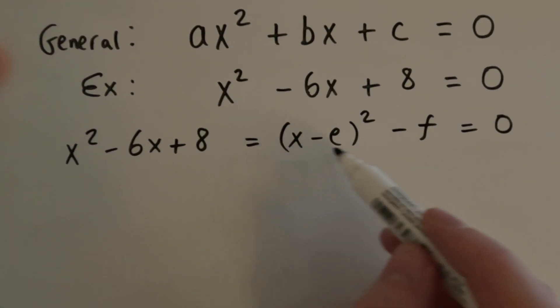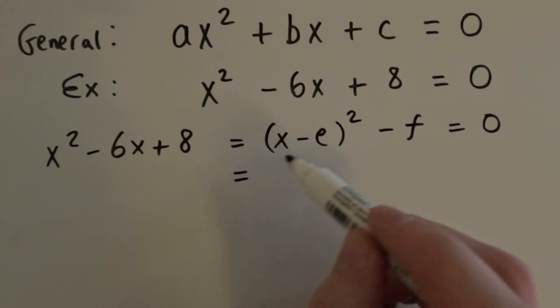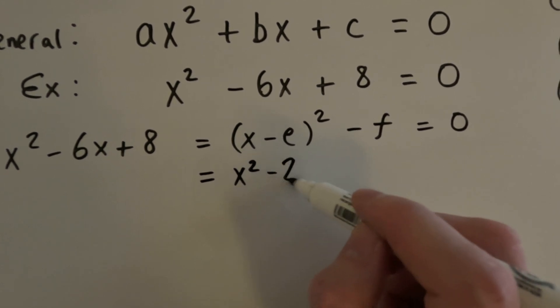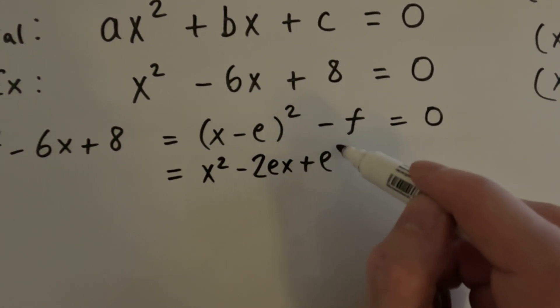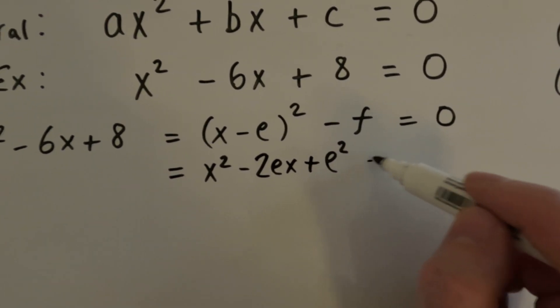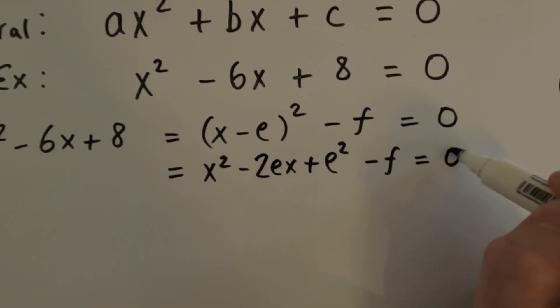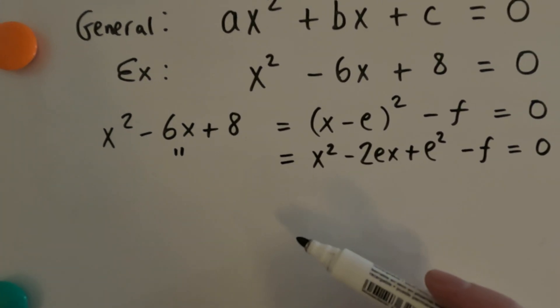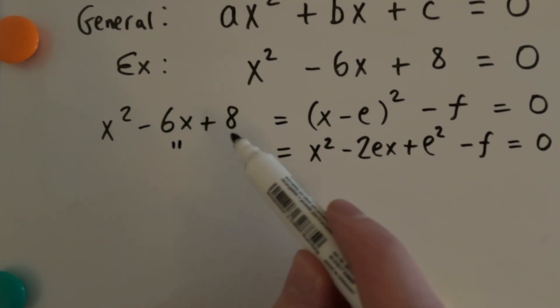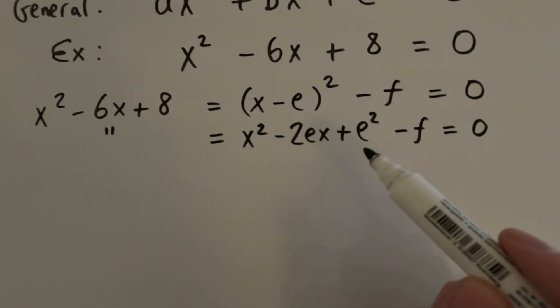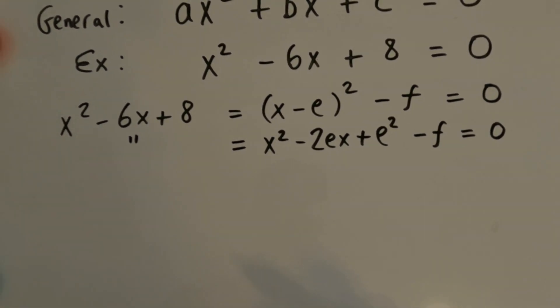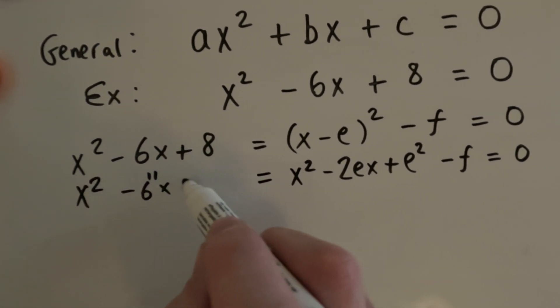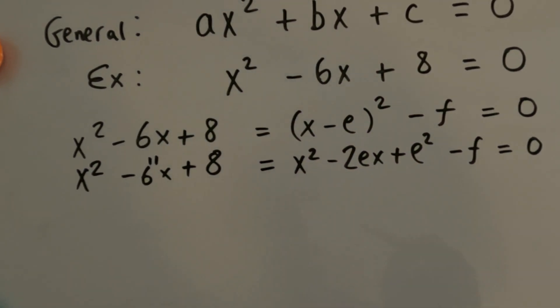So now, what we can do now is we can expand this out, the x minus e squared, to get x squared minus 2ex plus e squared. And then you've got your minus f, obviously. And that stays the same. Okay. So now we've got this x squared minus 6x plus 8 equals x squared minus 2ex plus e squared minus f. In fact, I'll just write it down just so you can see it a little bit easier.